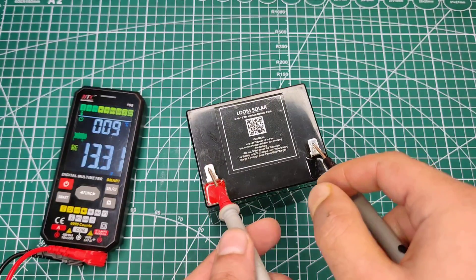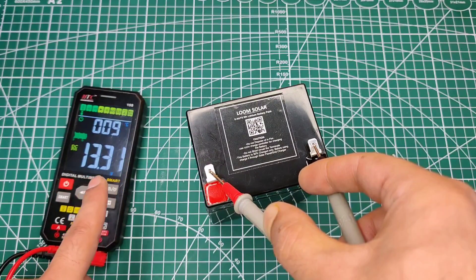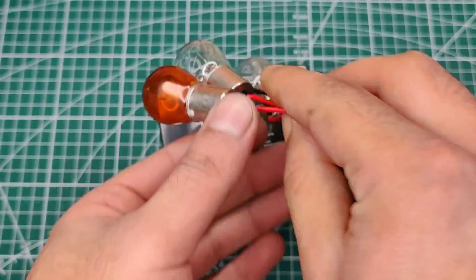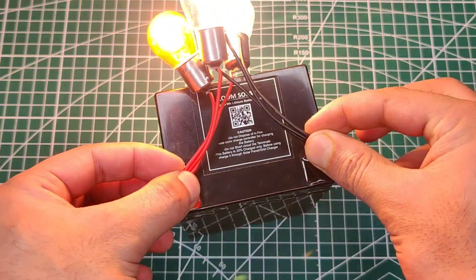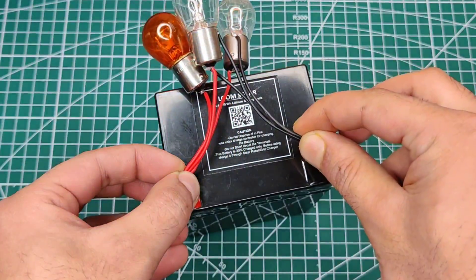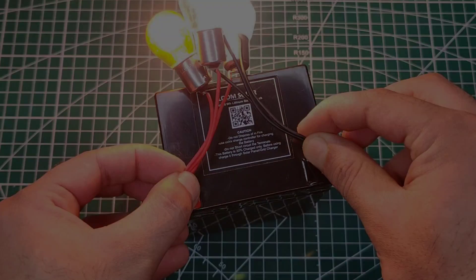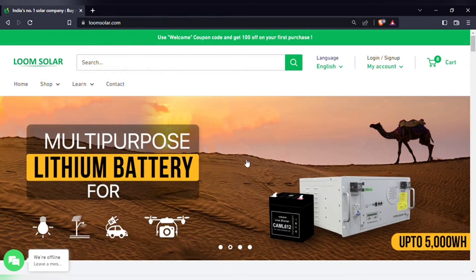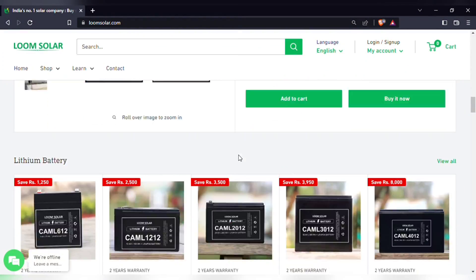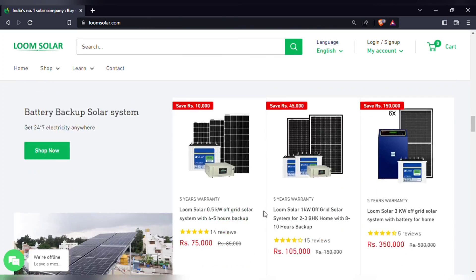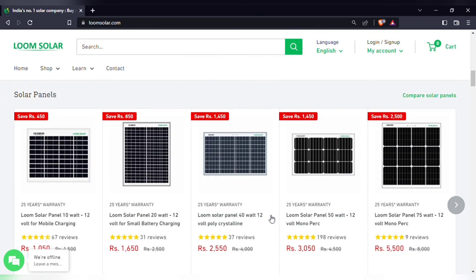Also the voltage of each cell is 3.2V, so output of 4 cells in series will be same as normal lead-acid batteries. And also these batteries can withstand higher loads without any problem than the lithium batteries. You can just visit LumeSolar.com, and here you can find different capacities of lithium batteries and also high-quality solar panels in affordable prices.